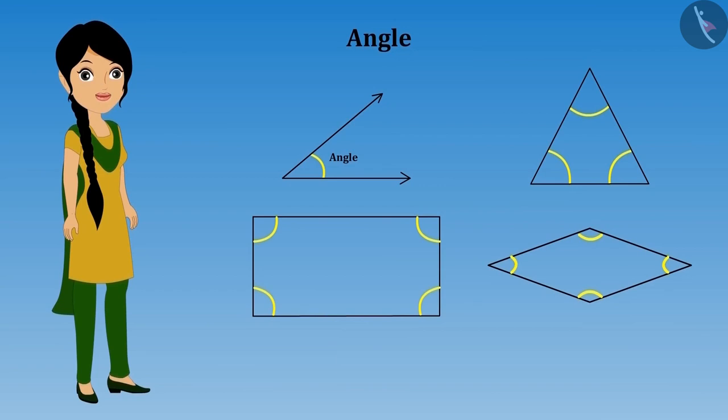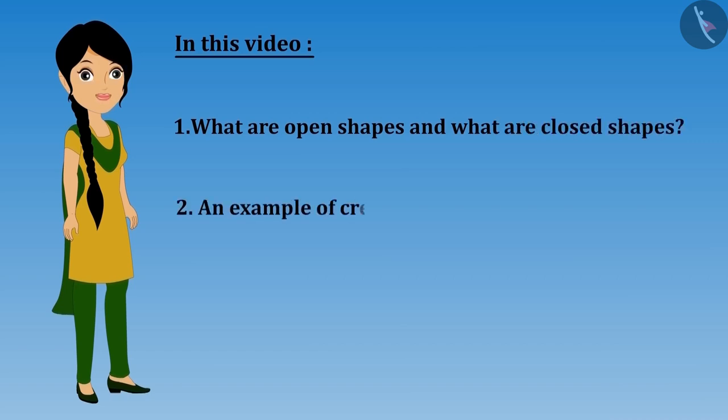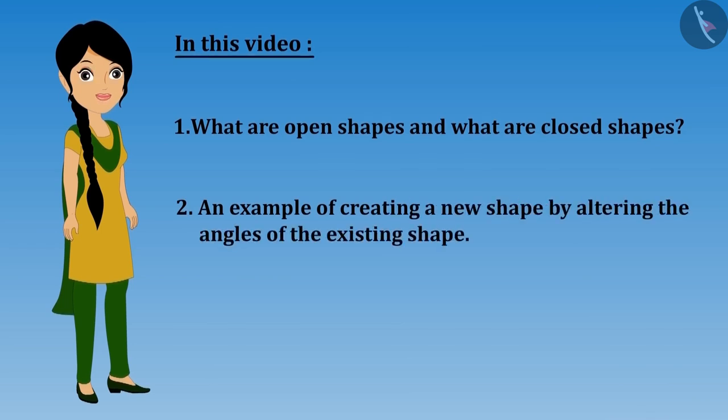Hello friends, in the previous video we have learned about angles along with Riva and Meena. In this video we will learn what are open shapes and closed shapes and we will see an example of creating a new shape by altering the angles of the existing shape.